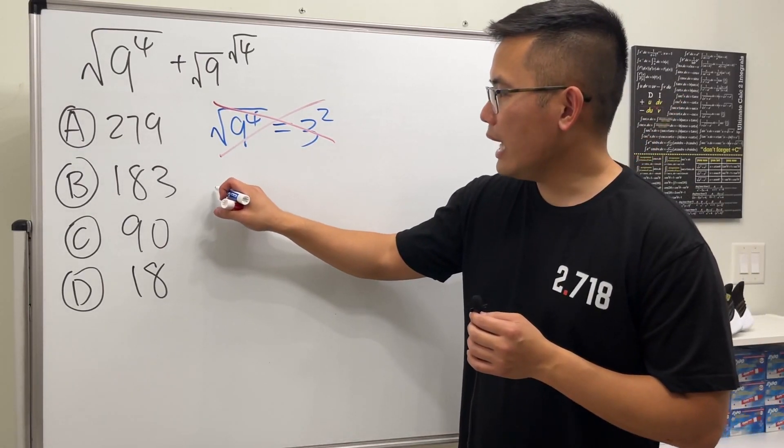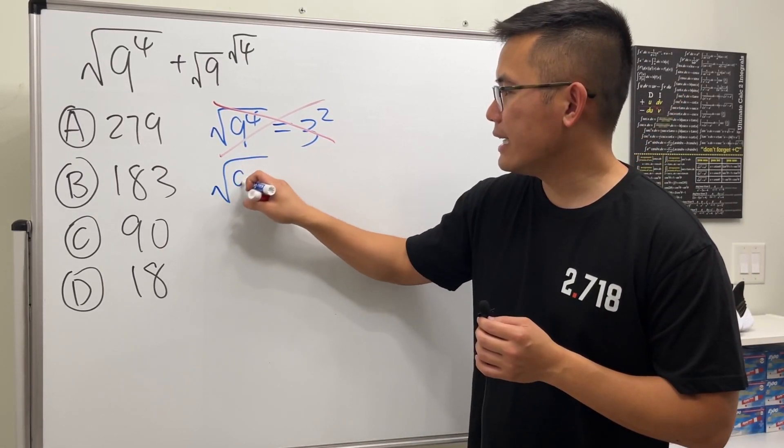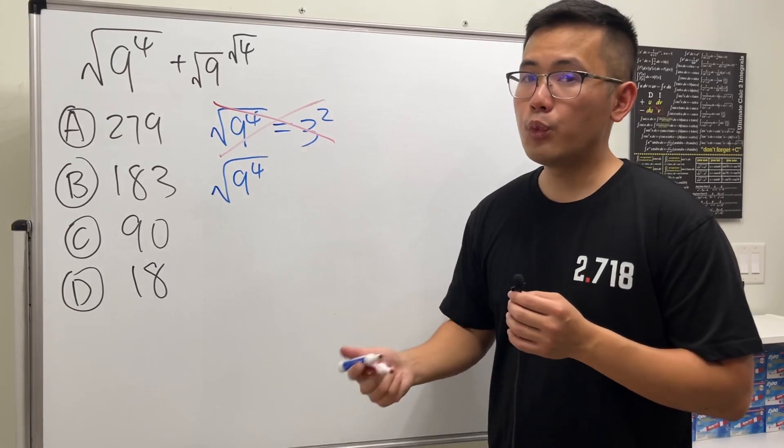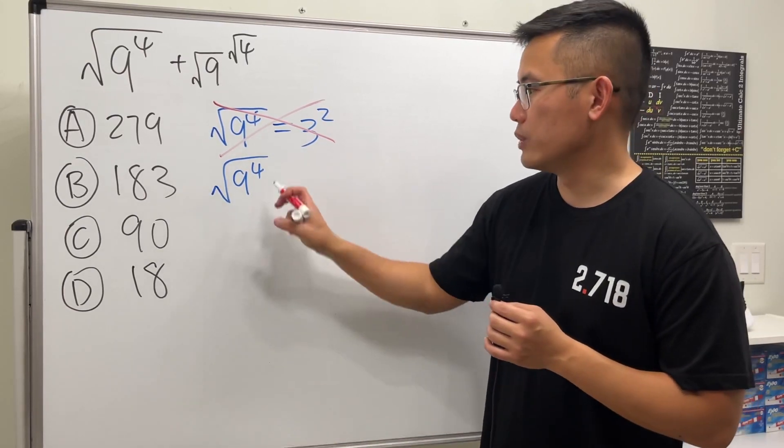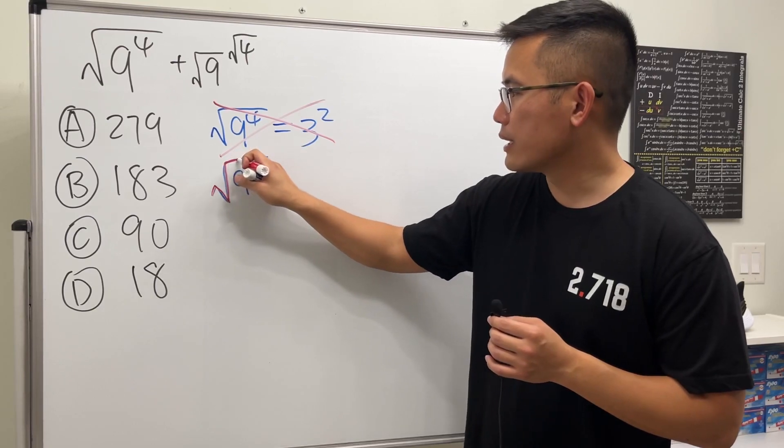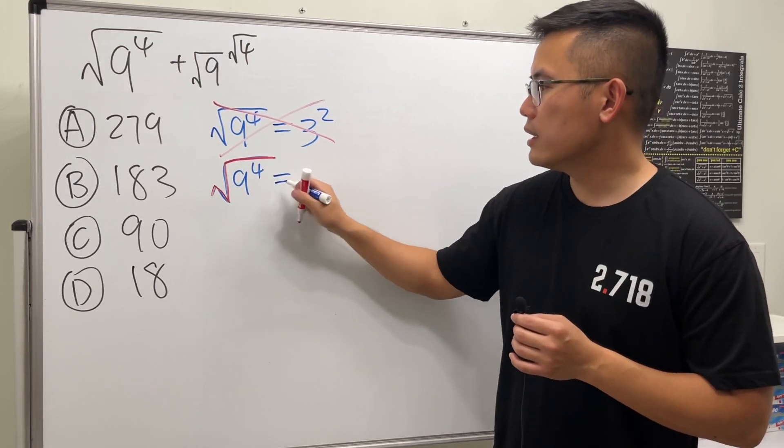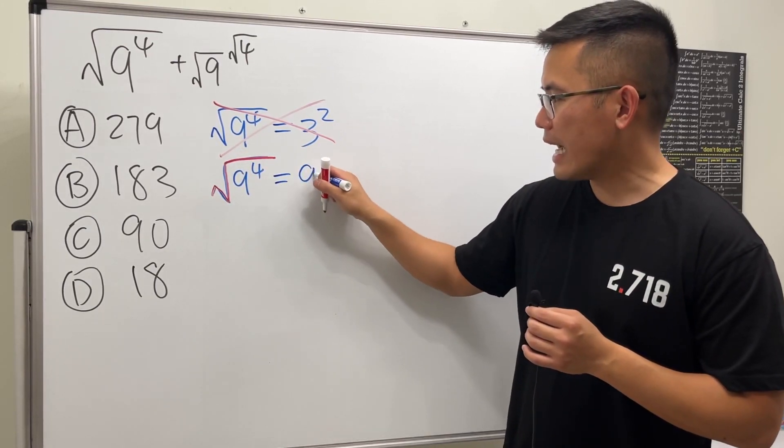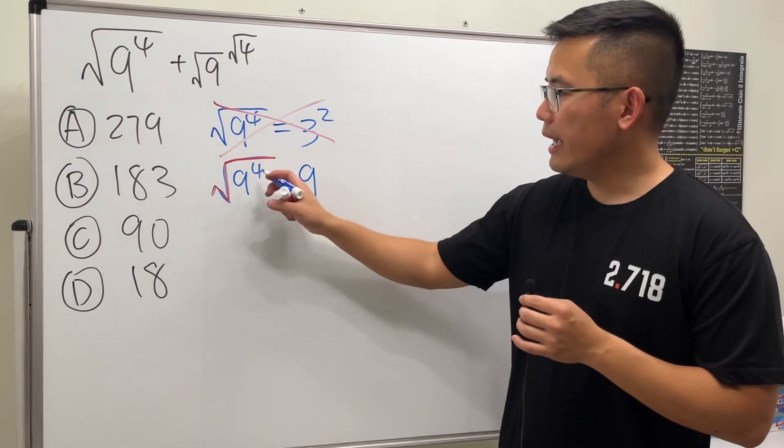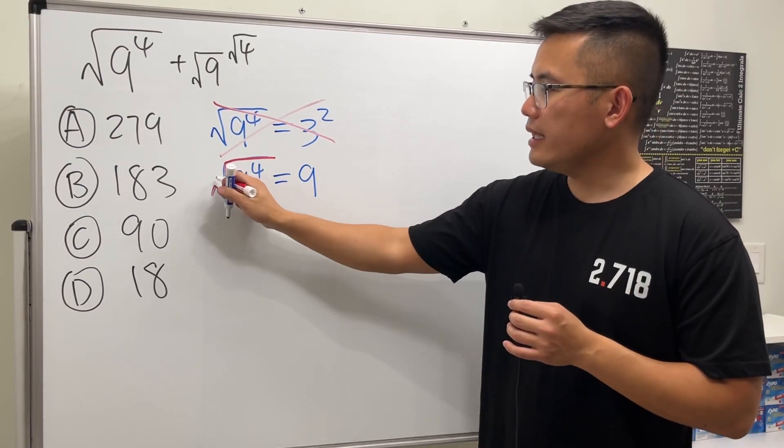When we have square root of 9 to the 4th power, this is how we simplify a radical with an exponent. When we have the square root like this, we're going to change it. You keep the base, 9, the same. The square root has an index right here,